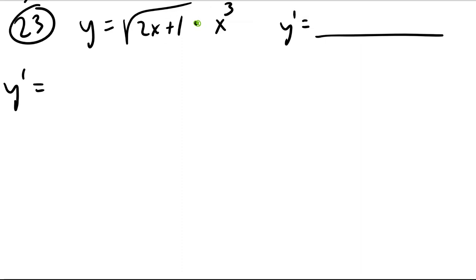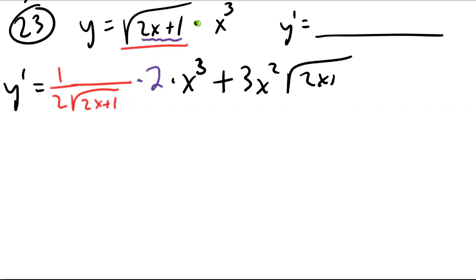Product rule says take the derivative of the left part, bring the power down, lower the power by one, and don't forget chain rule, times the second part left alone. Then plus and do it in the other order - take the derivative of the second part with the first part left alone.